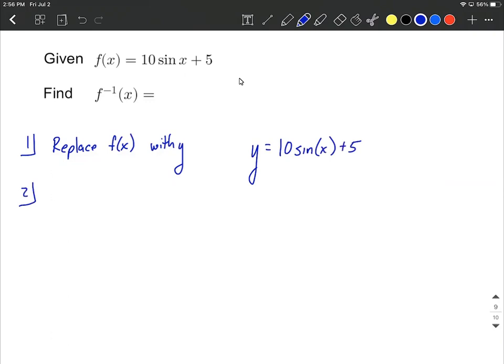Next step is we are going to switch all of our x's and y's. Basically, what that means is where you see a y, it's going to become an x. Where you see an x, it's going to become a y. So that's x equals 10 multiplied by sine of y plus 5.